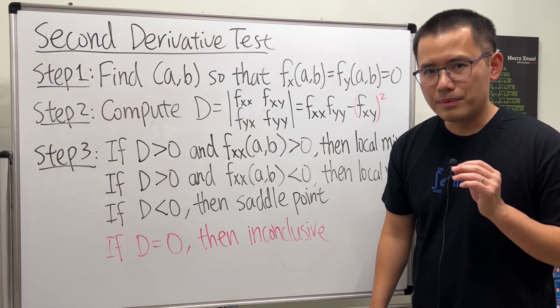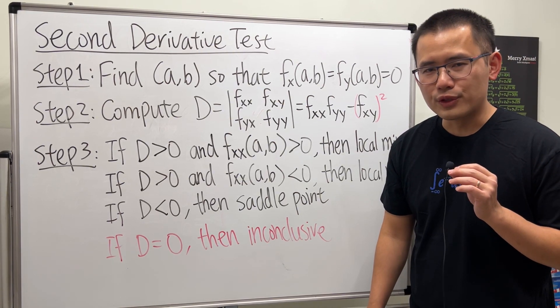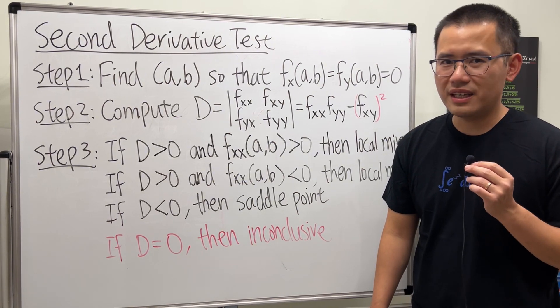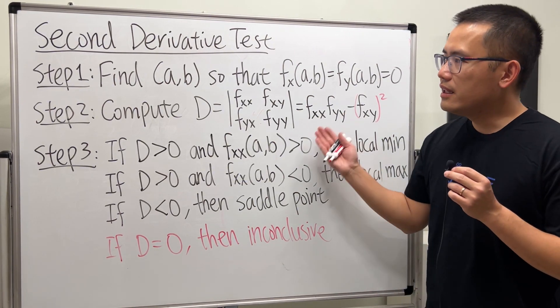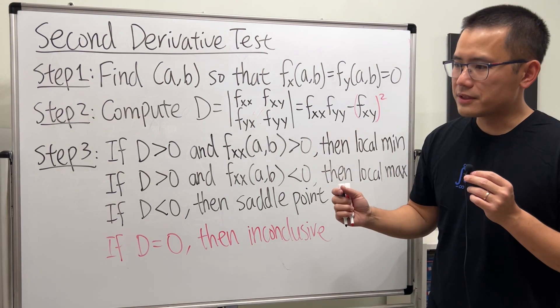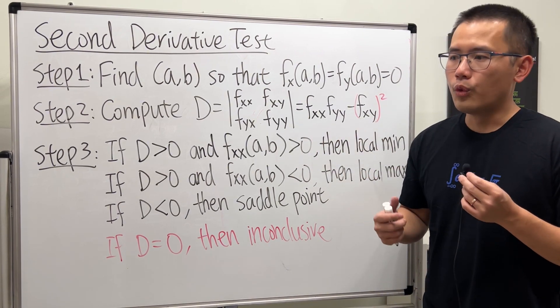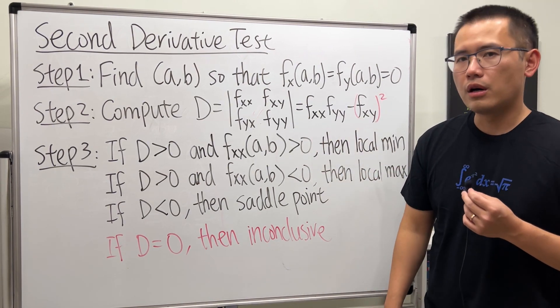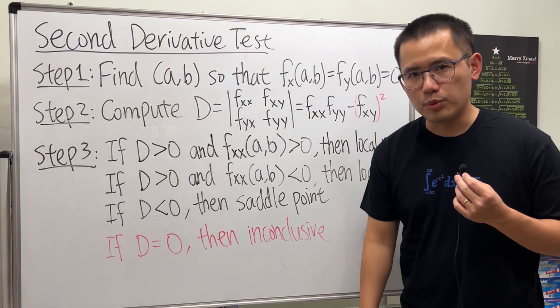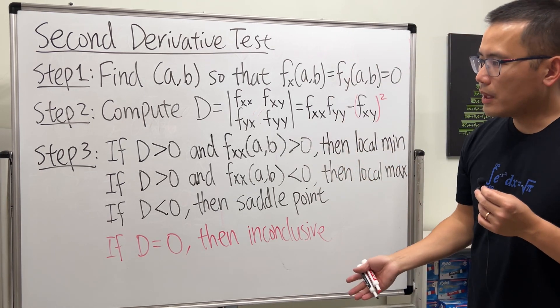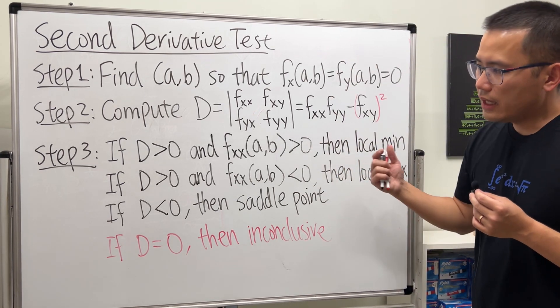Today let's talk about the Calc 3 version of the second derivative test. This is to help us find the local min, local max, or saddle points of a multivariable function. Let's talk about the steps first, and then later I'll show you an example.